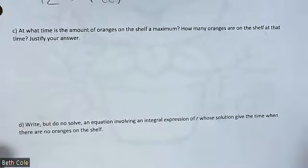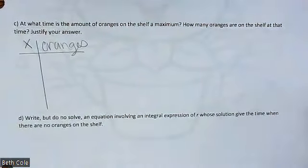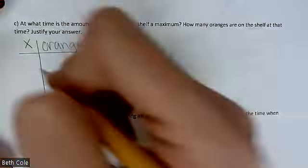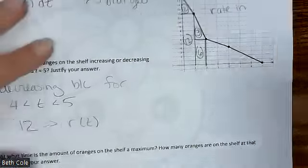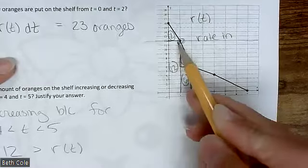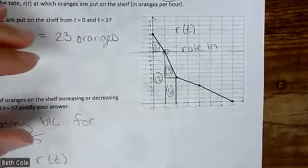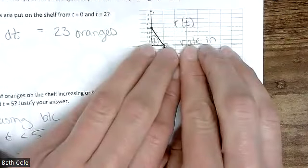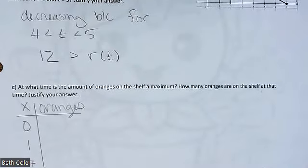Part c: at what time is the amount of oranges on the shelf at a maximum? This is a candidates test. Our candidates are the endpoints — zero and seven — plus any critical points. Critical points occur where the rate in equals the rate out. Rate out is 12, so draw a horizontal line at 12 on the graph; it intersects the curve at time one. Equivalently, just pretend that line is your x-axis and look for where the graph crosses it — that's your critical point at time one.